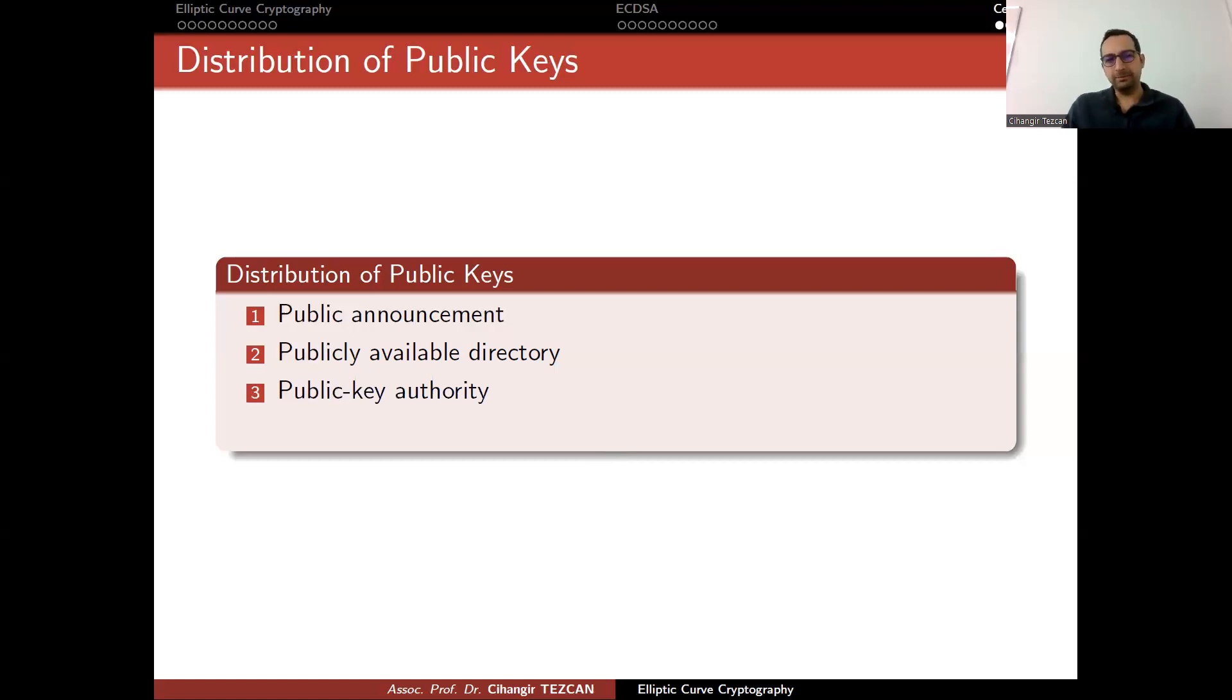Third option is the public key authority. This is also used in practice. There is an authority that keeps every public key of the people when they create their public key. This is a good method, but having a single authority to have these public keys can cause a denial of service attack. If you always ask the authority for the public key, you might cause a distributed denial of service attack because everybody now has to go to a single authority and ask for a public key.